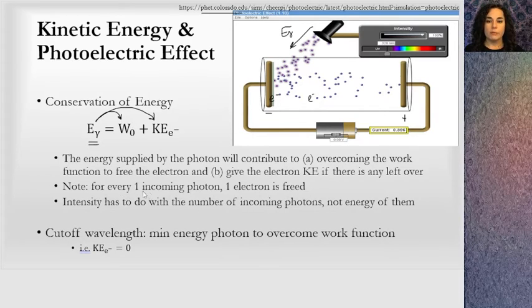Note for every incoming one photon, there is one electron freed. For every one photon coming in, there's one electron freed. This is where the idea of light being a particle comes into account. For every one electron, one photon gets absorbed. That photon must have a minimum amount of energy in order for that electron to get bounced out. If that photon is greater than that, it'll give the electron some kinetic energy.